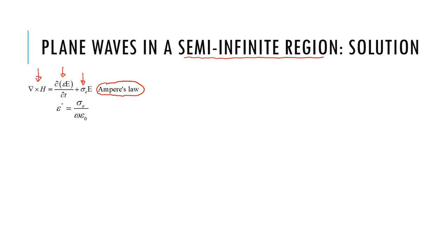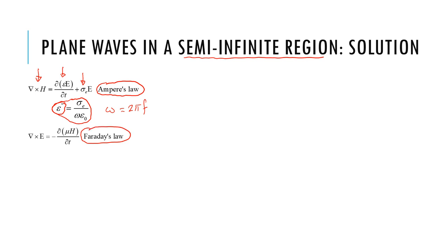For reference, σE is simply related to the dielectric loss, and ω is the angular frequency related to the frequency of the wave. The other Maxwell equation is Faraday's law: time-varying magnetic field produces an electric field, so ∇×E = −(∂/∂t)(μH).